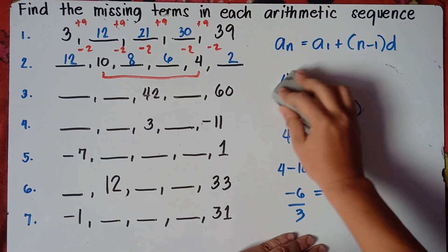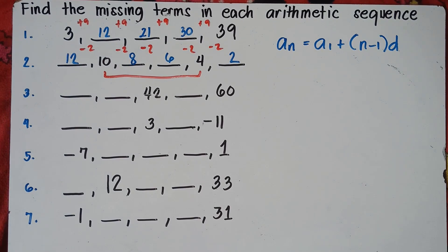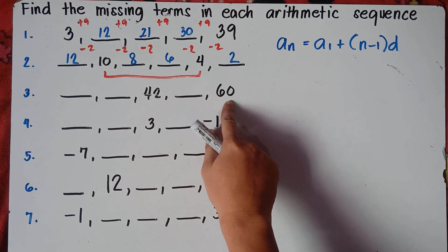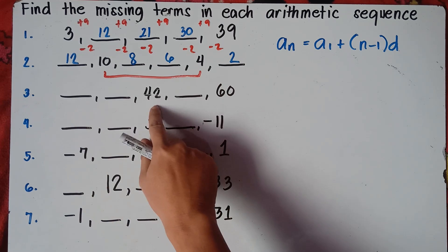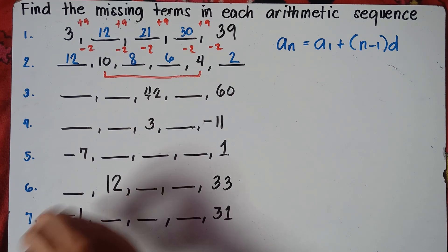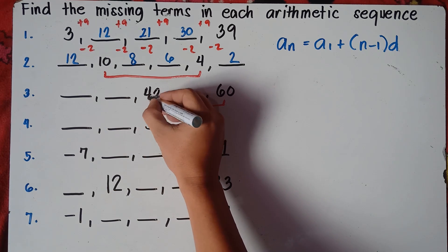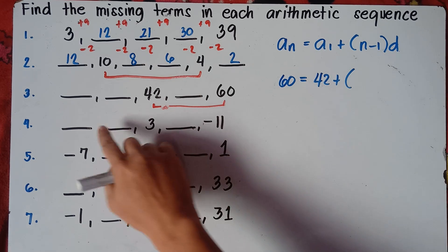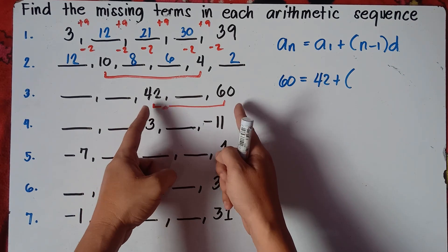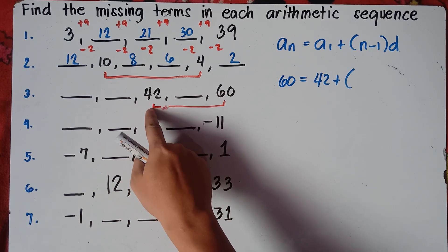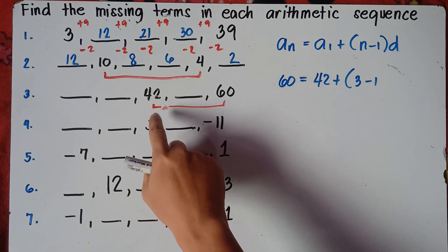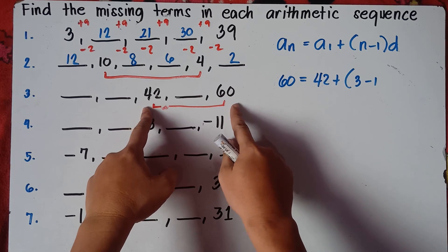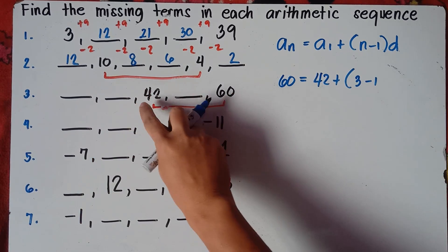Let's try number 3. We don't have the first or second term — we have the third term and the fifth term. We will use the third term as our first term, and 60 as our last term. The number of terms will be 3 instead of 5, since we only use these terms. So the formula: 60 equals 42 plus 3 minus 1 times d, which is 2 times d. So 60 equals 42 plus 2d.